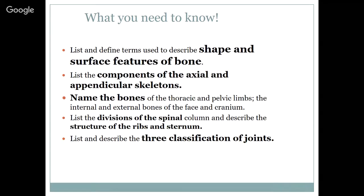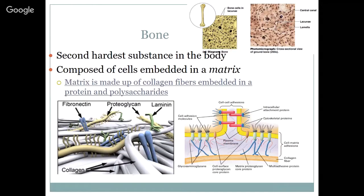We're going to describe the shape and surface features of the bone so you understand why different bones are shaped differently. We're going to list the components of the axial versus the appendicular skeletons. You're going to name the bones of the thoracic and pelvic limbs, the internal and external bones of the face and cranium, the divisions of the spinal column, and describe the structures of the ribs and the sternum. And we're going to list and describe the three classifications of joints.